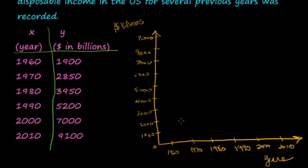So let's start plotting. In 1960, the disposable income in billions was 1,900, so that would be approximately right here. In 1970, it was 2,850, about right there.